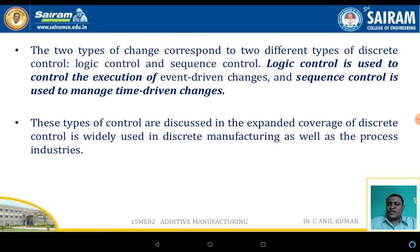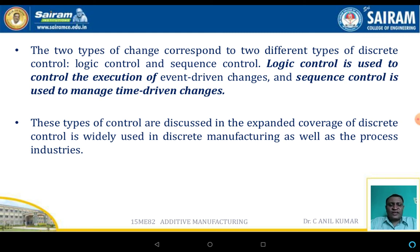The two types of changes correspond to different types of discrete control systems. Logic control is used to execute event-driven changes, while sequential control is used to manage time-driven changes. These types of control systems are discussed with expanded coverage, as discrete control systems are widely used in discrete manufacturing and processing industries.